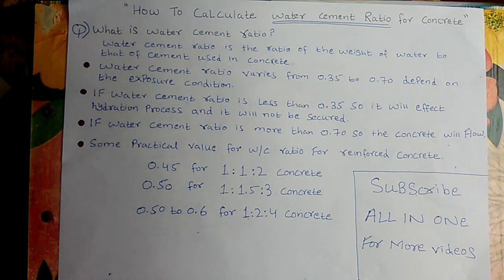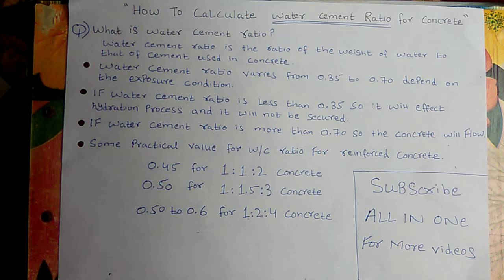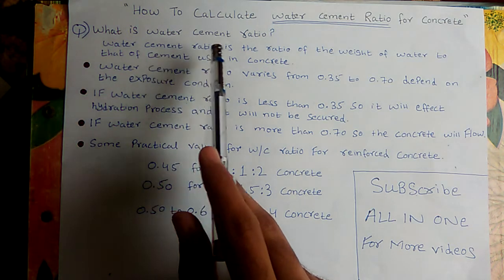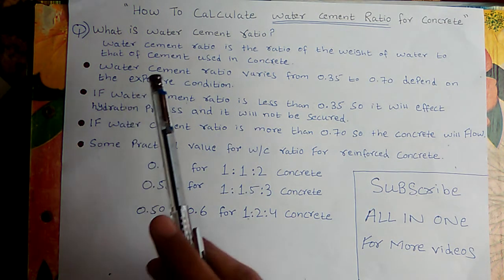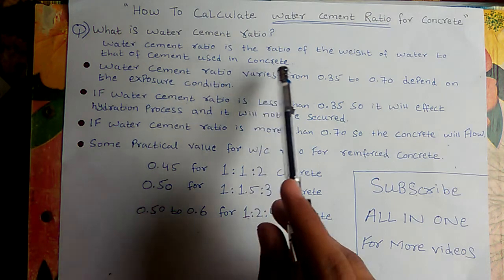Hello viewers, how are you? I hope you are fine. Today I will teach you how to calculate water cement ratio for concrete. First we need to know what is water cement ratio. Water cement ratio is the ratio of weight of water to that of cement used in concrete.